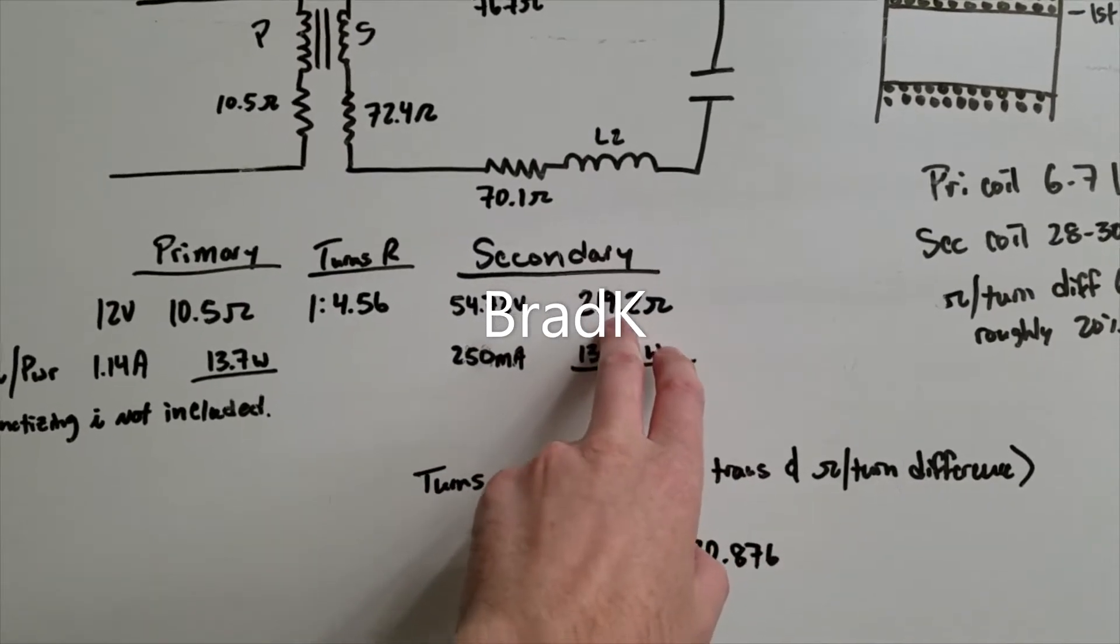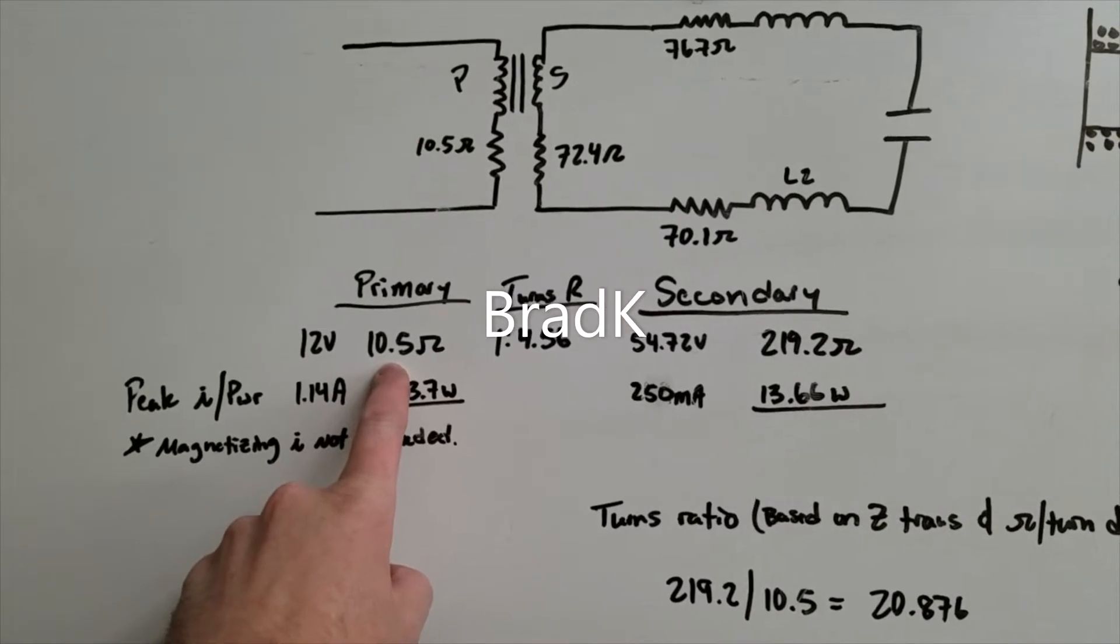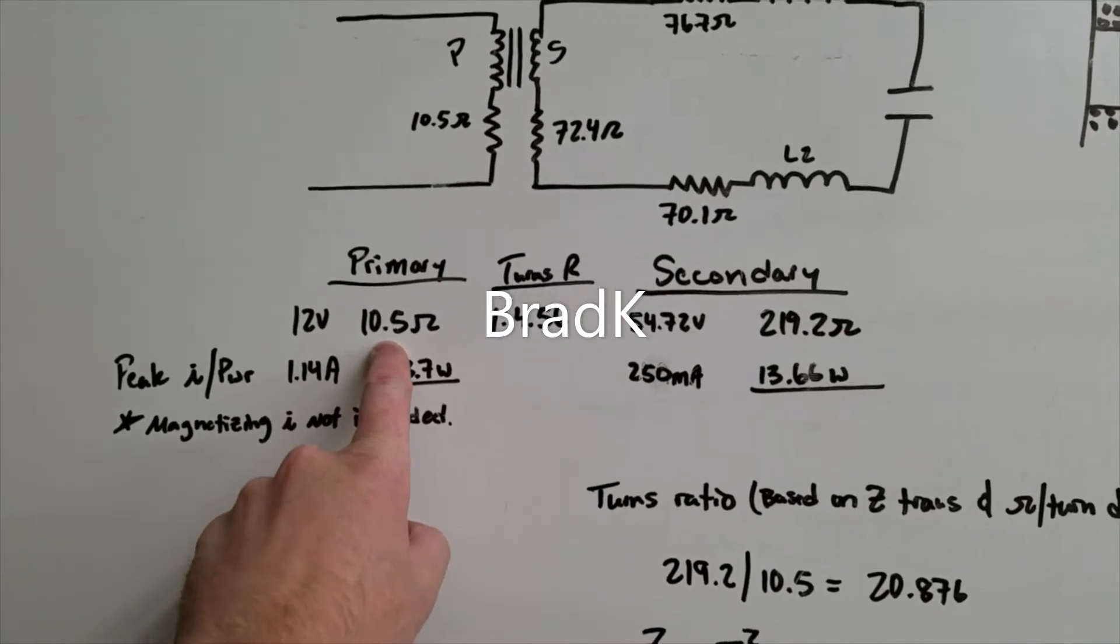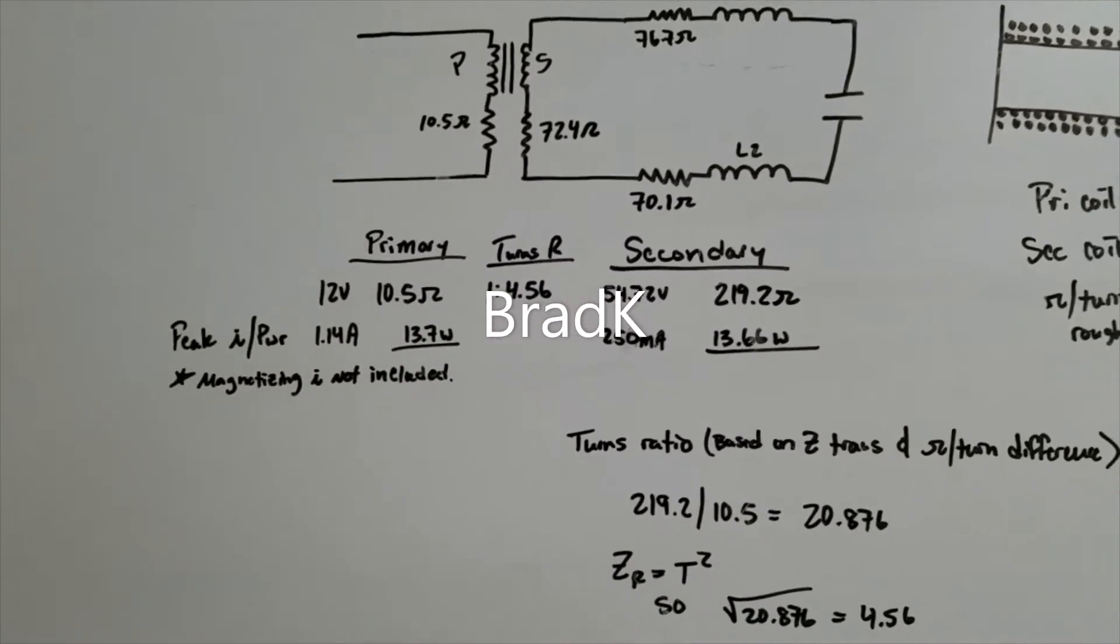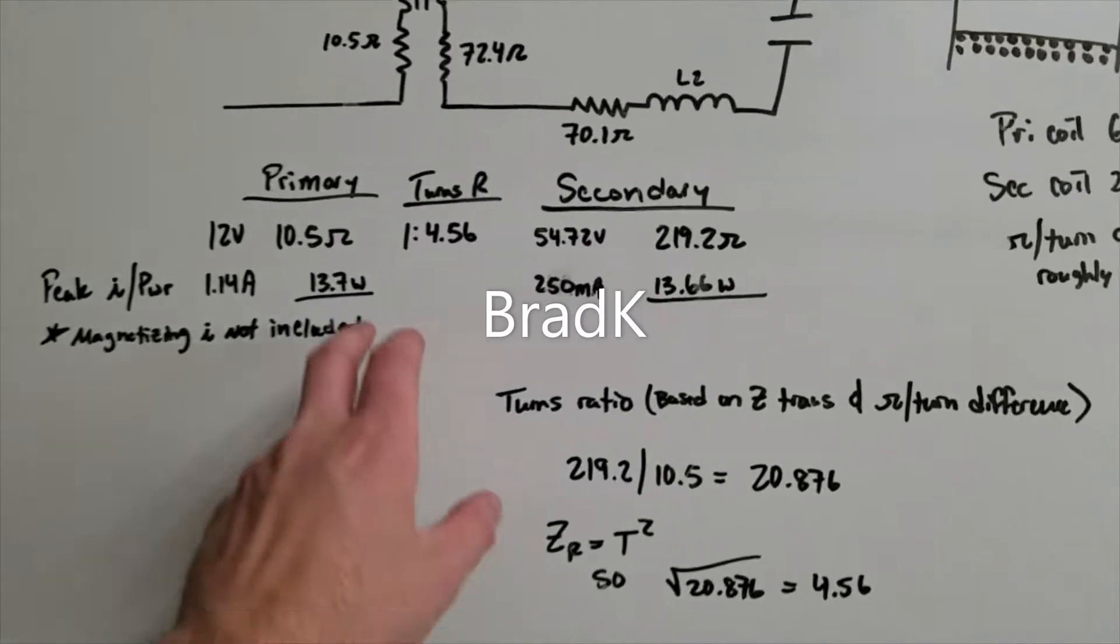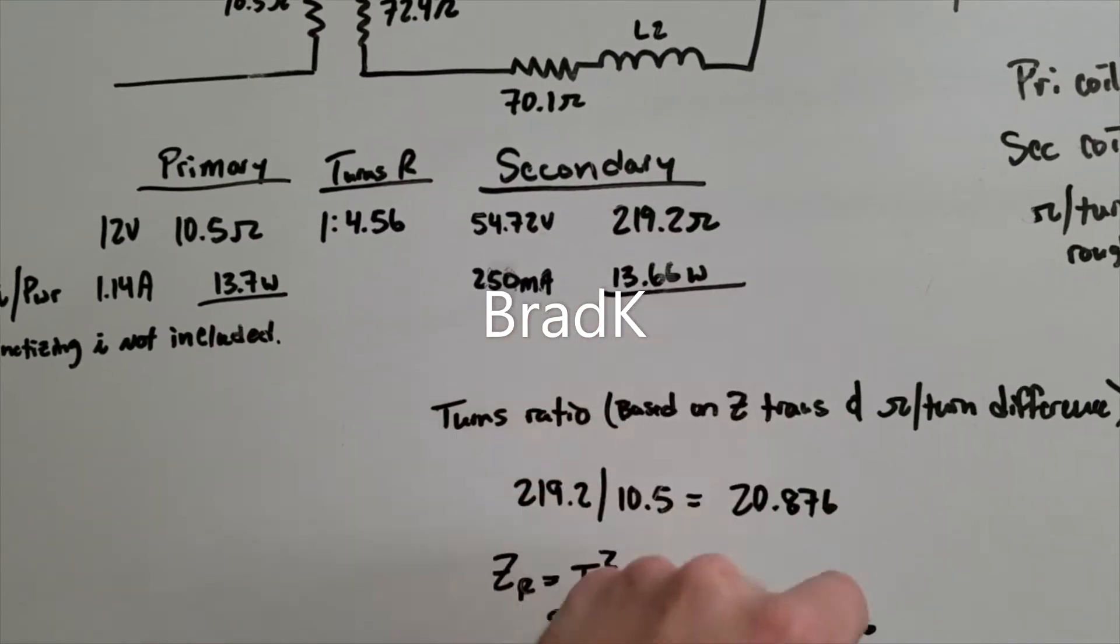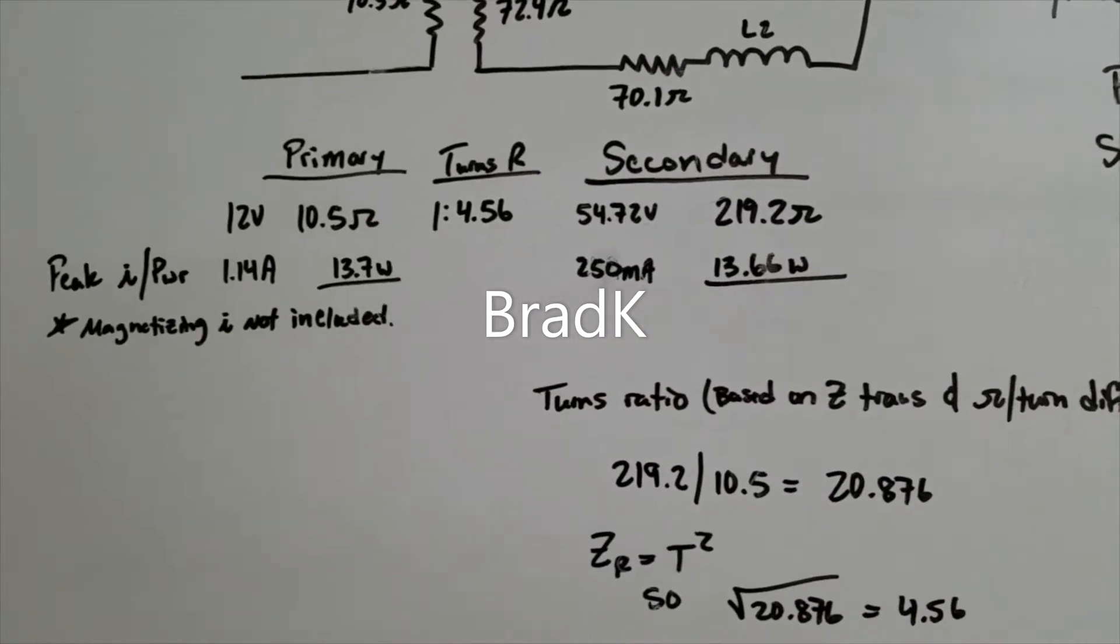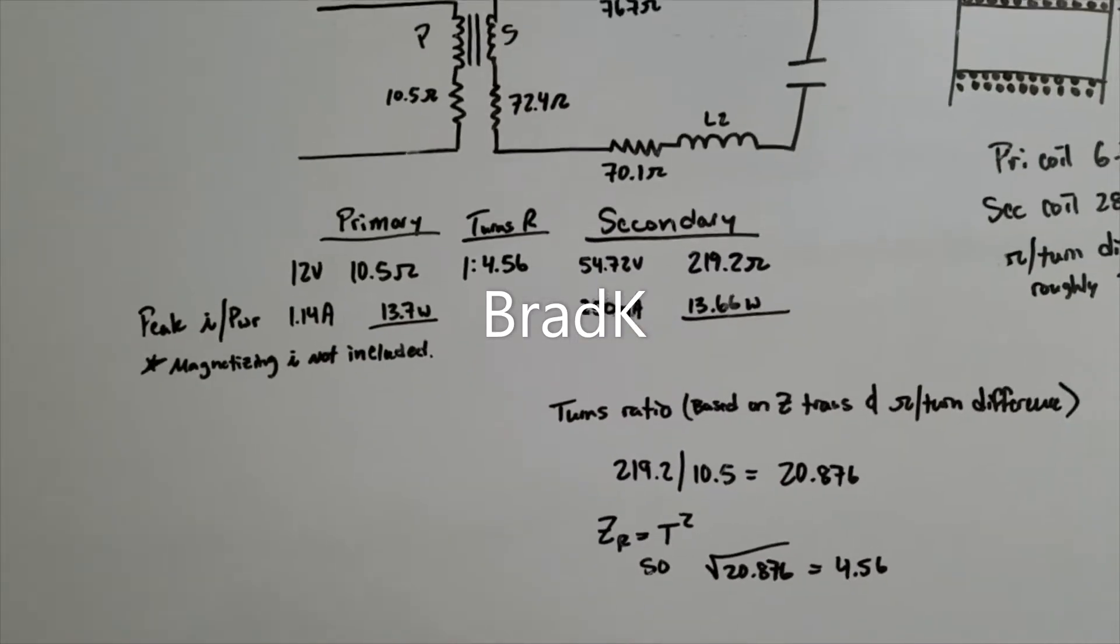So first off, if we use each coil and say they all act as secondary coils, and we take the resistance of all three coils together, 219.2 ohms, divide that by the resistance on the primary coil, 10.5 ohms, and then we look at our power draw, the power draw on the secondary side of the circuit is almost three times what it is on the primary.